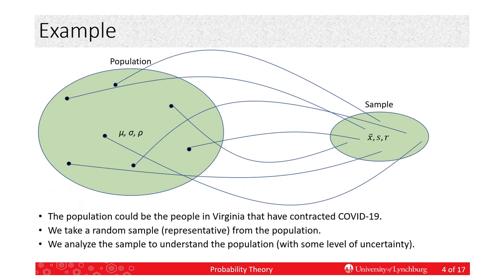So, let's talk about the people in Virginia that have contracted COVID-19, and we're going to call that the population over here, the big circle or oval on the left. And then we're going to take a sample, which is over on the right, that is representative of that population. There's a whole course on sample theory. We won't discuss that, but there are ways to make sure that our sample represents our population well, so that what we learn really is about the population.